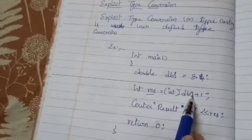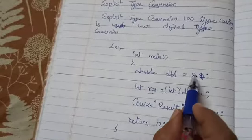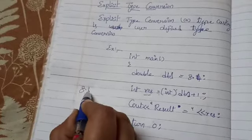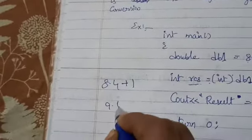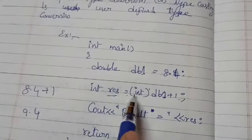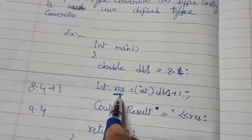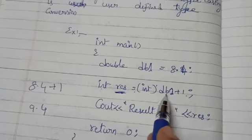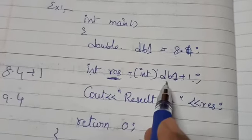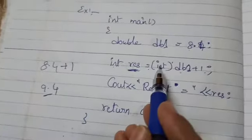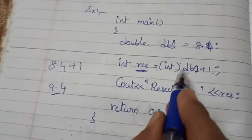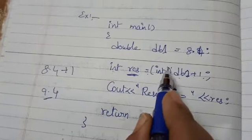RES is equal to DB1 plus 1. What is the value in DB1? 8.4. Plus 1 means you will get 9.4. If you want to convert this, but assigning value is integer type here. RES is the integer type, but you have DB1 is the float value. You are adding this one, you will get 9.4. You want to convert this one to integer type. Explicitly you have to tell within the bracket int.